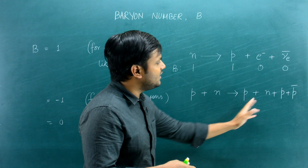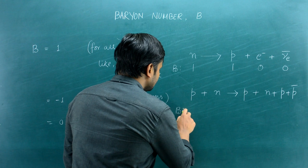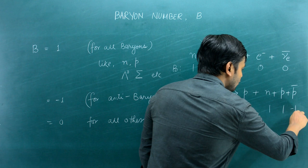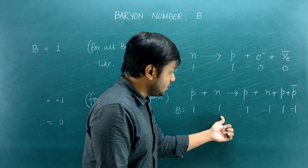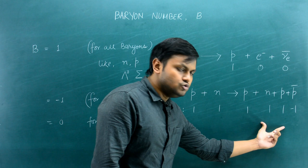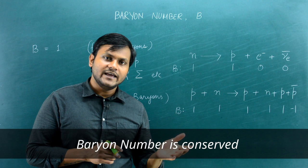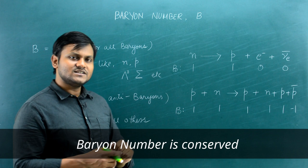In certain high-energy reactions, a proton and neutron may collide and create new particles: a proton, a neutron, another proton, and an anti-proton. The baryon number: left-hand side = 1 + 1 = 2; right-hand side = 1 + 1 + 1 + (−1) = 2. The baryon number is conserved, confirming it is a conserved quantum number in particle interactions.